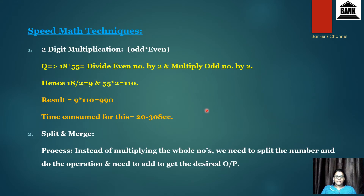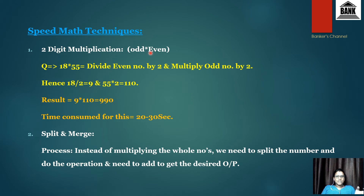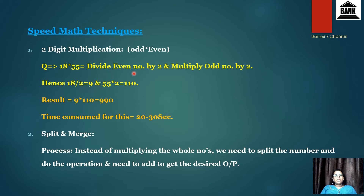Now let's look at speed math techniques. Instead of traditional multiplication, we can follow shortcuts. The first technique is two-digit multiplication when one number is odd and one is even. For example, 18 × 55: divide the even number (18) by 2 to get 9, and multiply the odd number (55) by 2 to get 110. Then multiply 110 × 9 = 990.